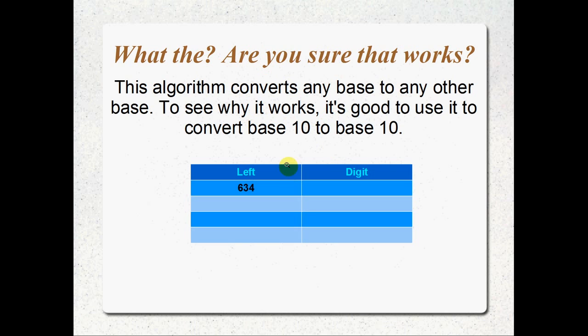If you're confused about how that works, it's really helpful to look at it converting from base 10 to base 10 — a pointless exercise, but it will show exactly what this algorithm is doing. This algorithm can actually be used to convert to any base: hexadecimal, base 8, base 9, base 3, base 427 million — it doesn't matter. It'll convert to any base, no worries.